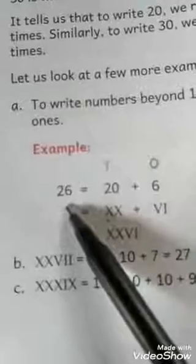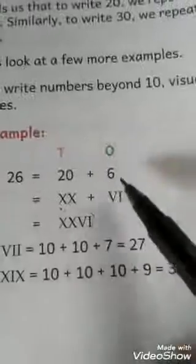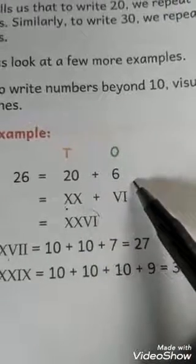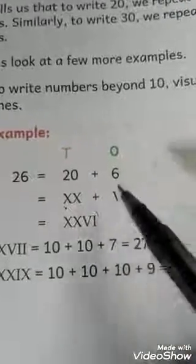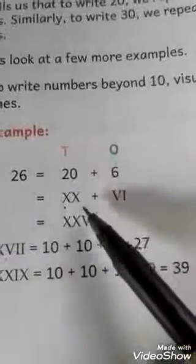To make Roman numerals, firstly we expand the numbers like 26. What do we have done in the expanded form? Like 20 plus 6. Now it's easy for you to make Romans. Like 20 ka symbol kya hai? Double X.